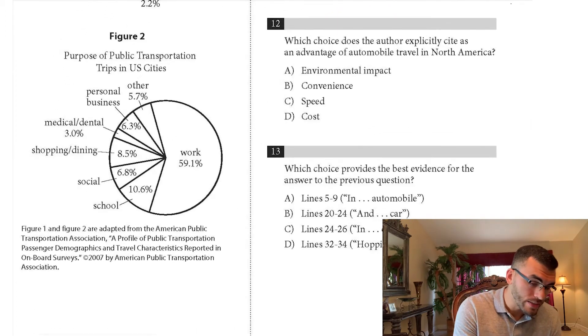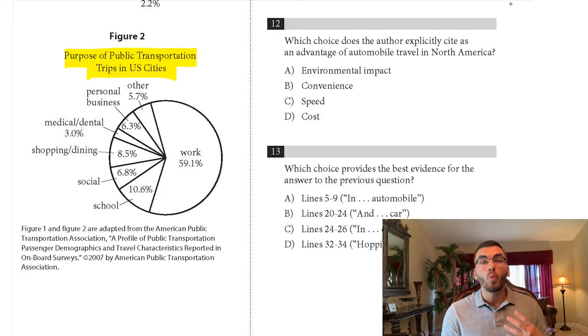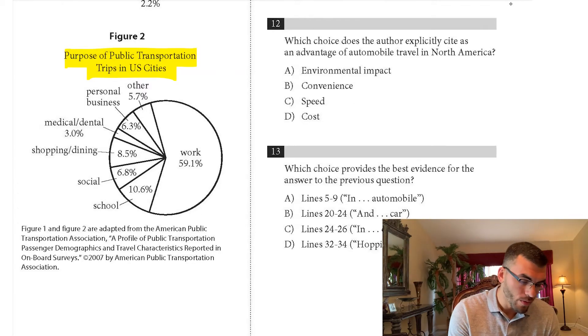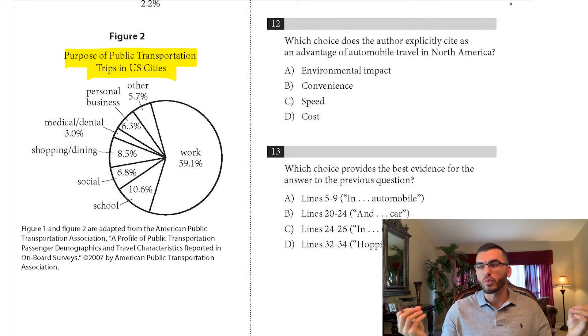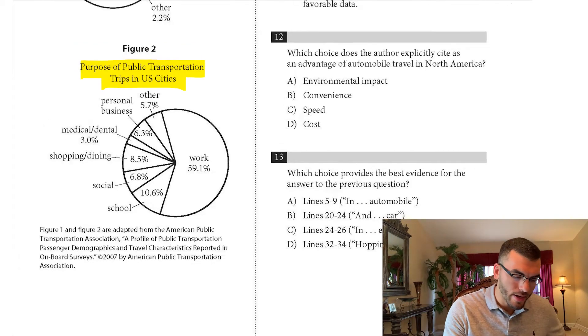Figure two, the purpose of public transportation trips in US cities. When people take public transportation, what's the purpose of that trip? Why are they taking that trip? Well, some people are going to work, some people are going to school, some people are going shopping or going out to eat. So that's all that's saying. Okay. So we have a good understanding. The job of people who take public transportation and why people take public transportation. Where are they going? Okay. I got an understanding. Let's go back and look at the questions.